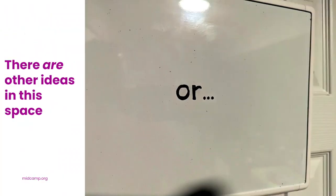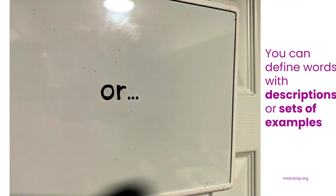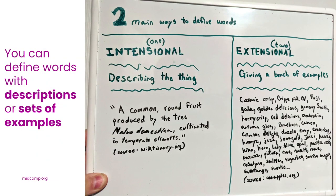Some time has passed since Plato and other folks have weighed in. The main concept from this wall of text is that you can try to describe a thing or concept, or try to give enough examples that the description is implied.